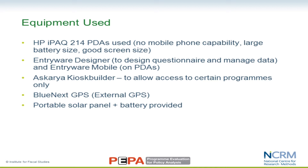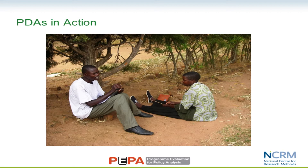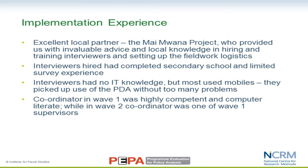We used a kiosk program that locks down the PDA to only the necessary applications. We also used an external GPS unit to try to collect GIS information. Because electricity is not very available in these areas, we provided interviewers with a portable solar panel and a battery to store the solar charge. Interviewers were also given small bags to carry the equipment safely and prevent damage.